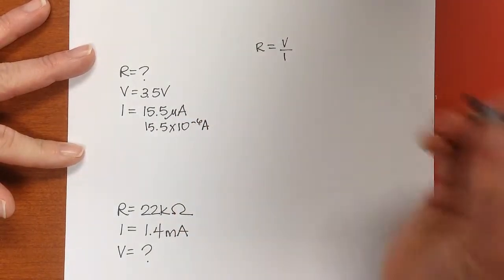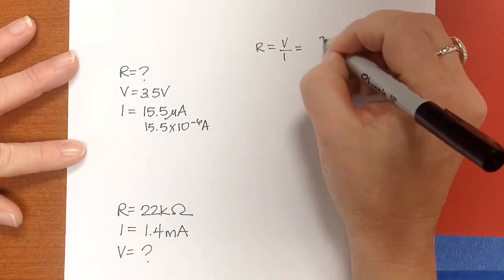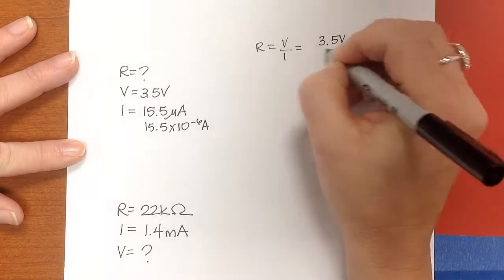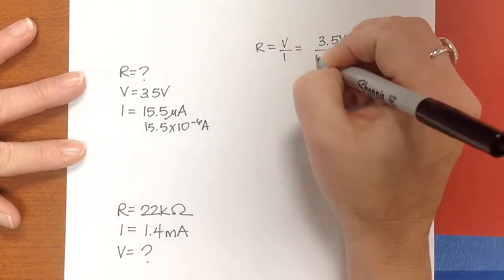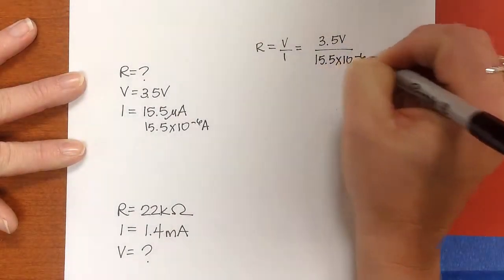All right, and so when I plug this in to solve for R, I'm going to have 3.5 volts divided by 15.5 times 10 to the negative 6th Amps.